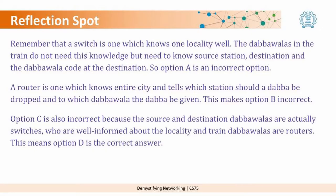Some of you might have selected option A. As we heard from the definition, switching Dabawalas know their locality very well. The source and destination Dabawalas do know their locality well since they pick up and drop off Dabbas, but not all of them are switches — so option A is incorrect. Some might have picked option B, that all Dabawalas are routers. However, a router knows the city but not the locality, so all Dabawalas cannot be routers. The correct answer is D: the Dabawalas in the train are routing Dabbas across the city, while the Dabawalas at the source and destination are switching — knowing their locality well — unlike the train Dabawalas who know the entire city. Hence, option D is correct.